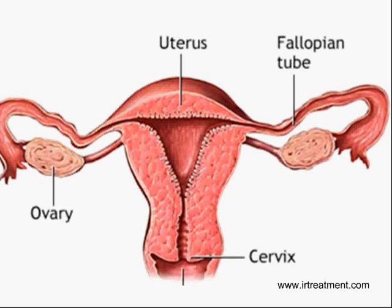The uterus has two tube-like structures called fallopian tubes. Fertilization takes place in these tubes. Thus, a block in this tube would mean the inability to conceive.